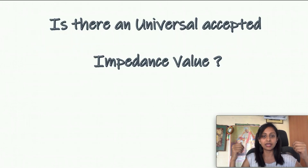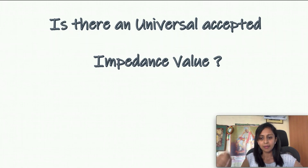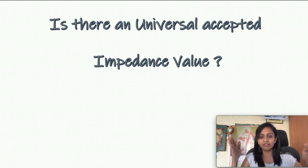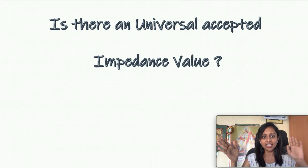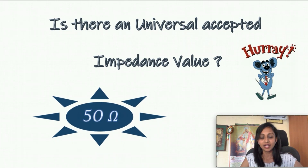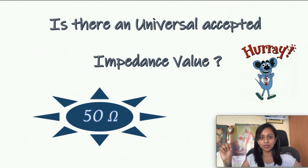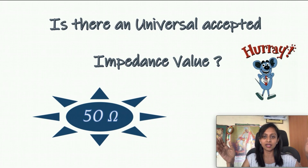The next question is: there are n number of companies who manufacture n number of antennas, so is there any universally accepted impedance value? We need to have one, because I need to follow one impedance value so that every company manufacturing an antenna will tune into that same source impedance. How much is that impedance? It is 50 ohms — easy to remember. We always keep 50 ohm impedance for an antenna so that the source impedance is also 50 ohms, hence achieving maximum power transfer.